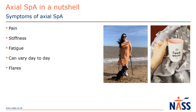Along with these daily variations, axial SpA is a condition that can cause flares — a period of time where the symptoms are worse. Some people can track their flares and identify triggers, or pace activities with rest to avoid overdoing it, but sometimes there can be no trigger at all, and a flare will occur out of the blue.